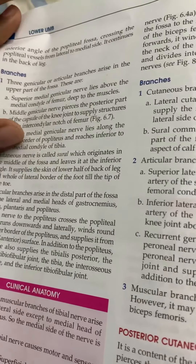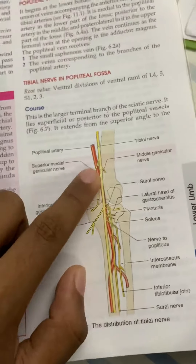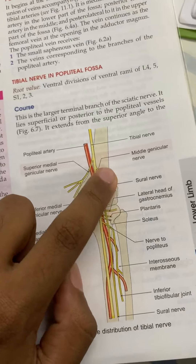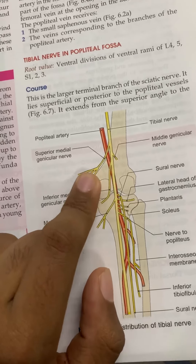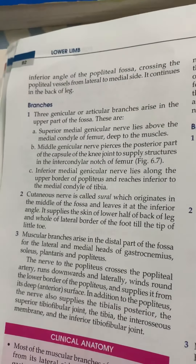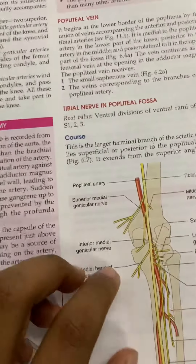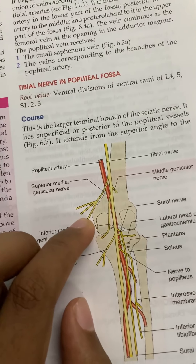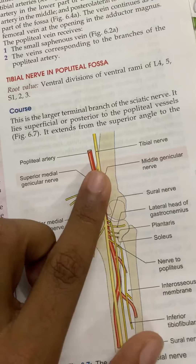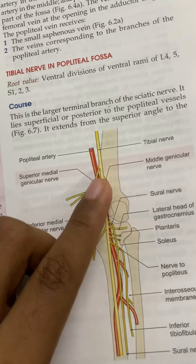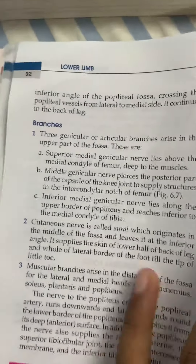The branches of the tibial nerve include the superior medial genicular nerve, middle genicular nerve, and inferior medial genicular nerve. The superior medial genicular nerve lies above the medial condyle of the femur and extends onto the medial condyle of the tibia. The middle genicular nerve pierces the floor of the popliteal fossa.